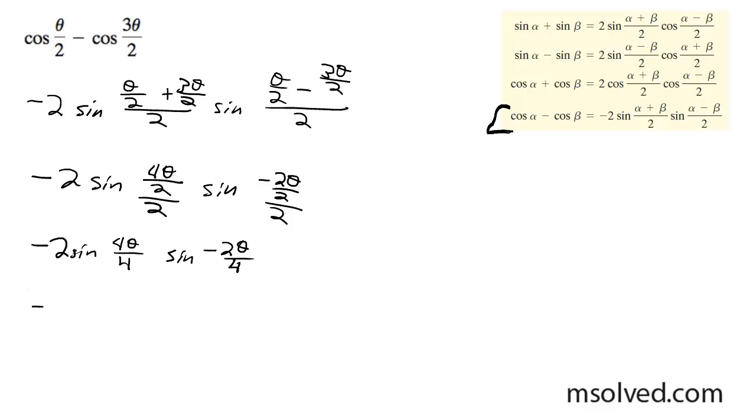Finally we can come down here negative 2 sine theta times, I can pull out the negative, negative sine theta divided by 2. Finally I can rewrite this as 2 sine theta times sine of theta divided by 2.